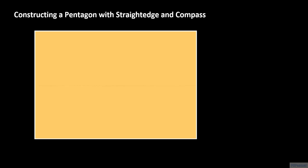We begin the construction of our pentagon by constructing a straight line which we designate to be our x-axis. It doesn't have to be horizontal, as any line will do. We pick a point O on the line and designate it to be the origin. We set our unit length, or length 1, to be the length of our straight edge. Let the point 1 unit to the right of point O on the x-axis be the point A. Using segment OA as the radius for our compass, we construct the unit circle.